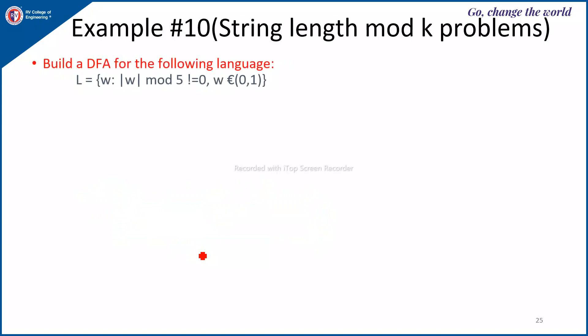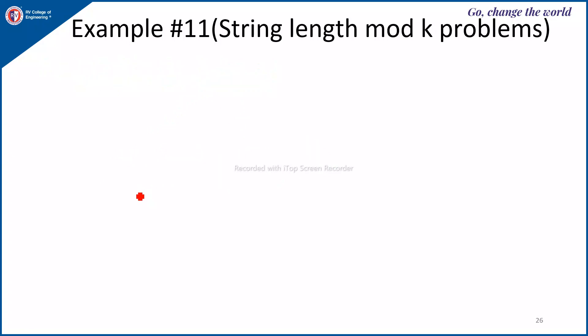Next, here it is of same kind, the length of the string modulo 5 not equal to 0. So again here you have 5 states 0, 1, 2, 3, 4 and since the condition is that modulo length is not equal to 0, it means Q1, Q2, Q3, Q4 will be the final state and the construction is similar to the previous problem.